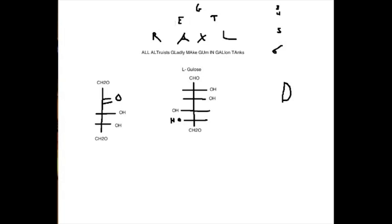Glyceraldehyde, erythrose, talos, ribose, arabinose, xylose. Xylose is dyslexic cousin, Lixose. And then allos, altruists, glucose, mannose, goulose, indose, galactose, and talos.